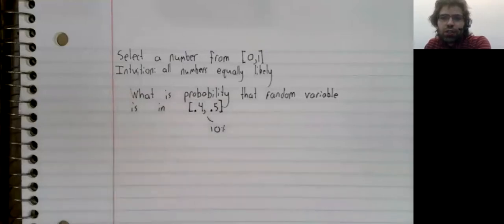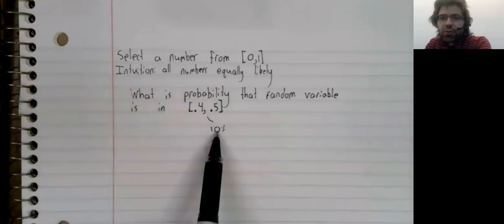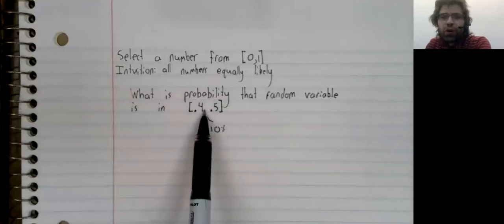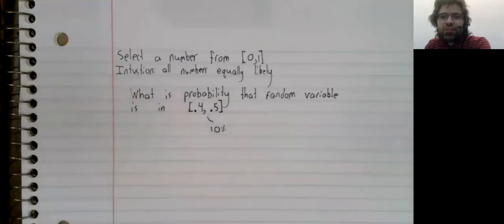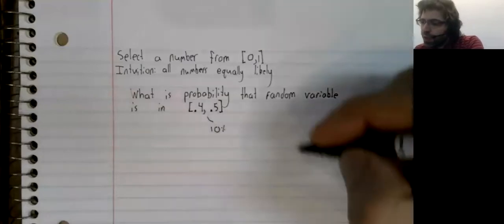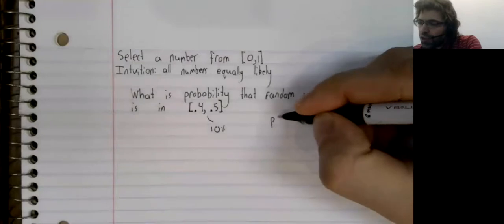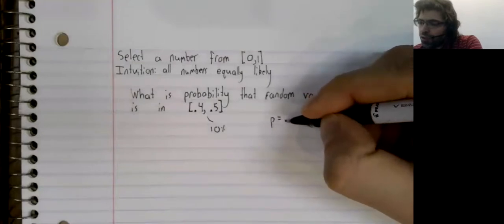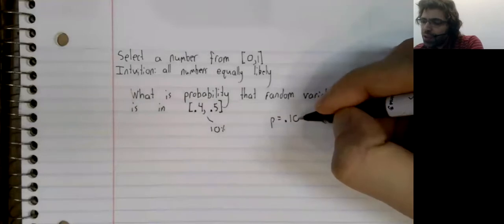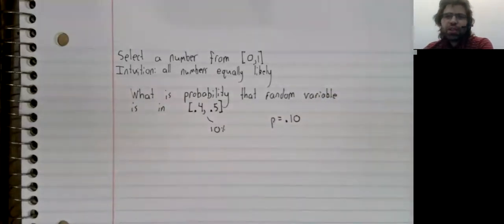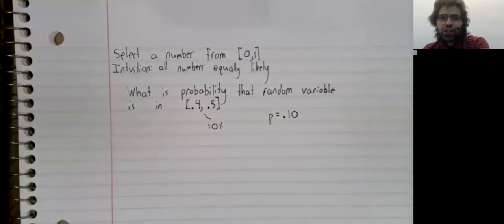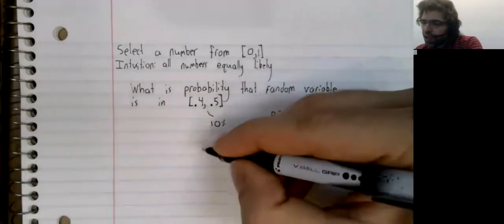Then, over the long run, about 10% of the outcomes should fall in this interval. So, our intuition suggests that the probability should be 0.1.